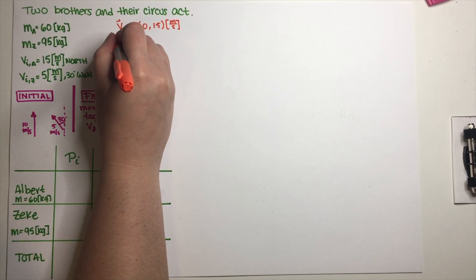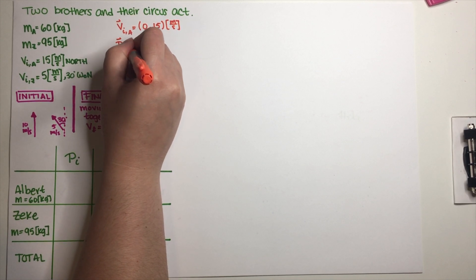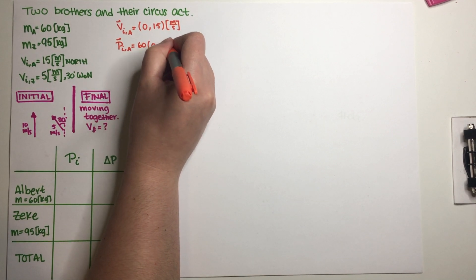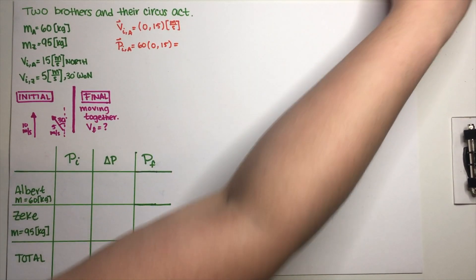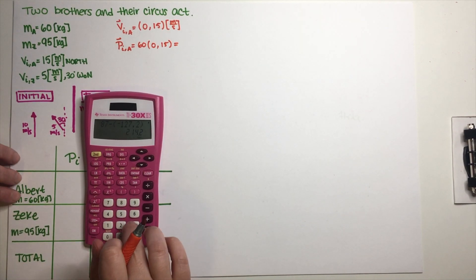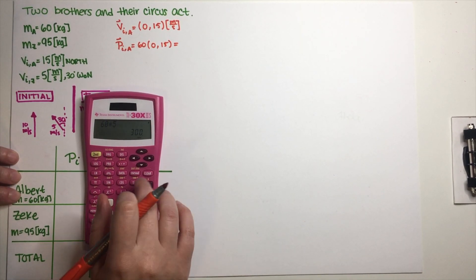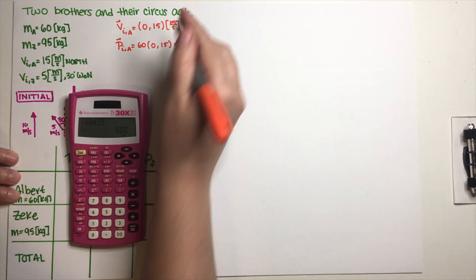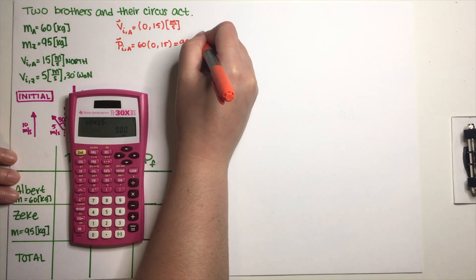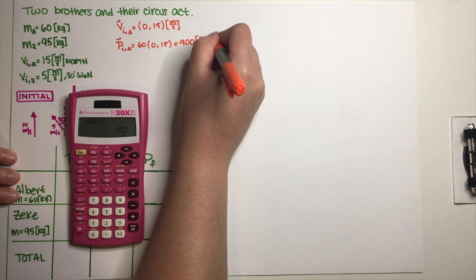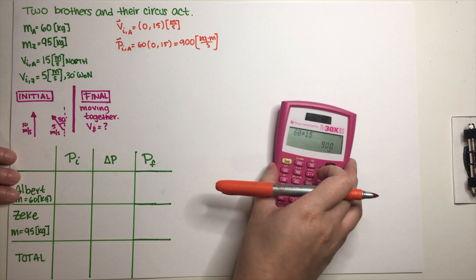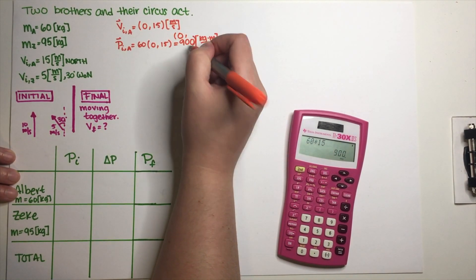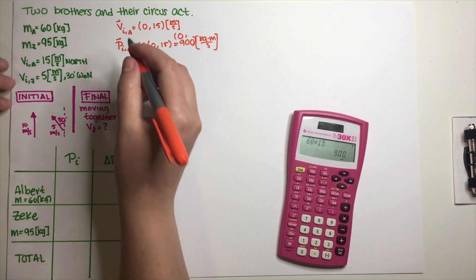To get the initial momentum for Albert, all I have to do is multiply Albert's mass times his initial velocity. That gives us his initial momentum: 60 kilograms times (0, +15) equals (0, +900) kilogram meters per second — zero on the x-axis and positive 900 on the y-axis.